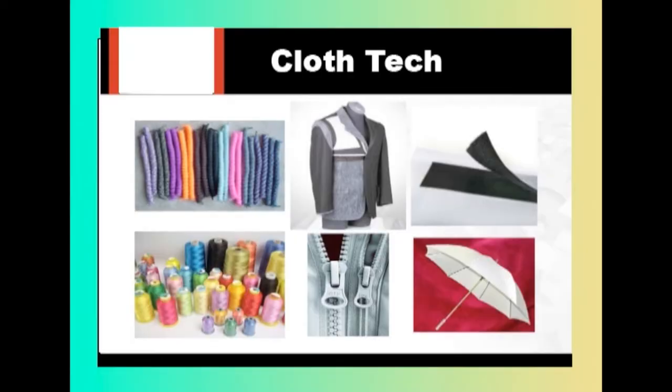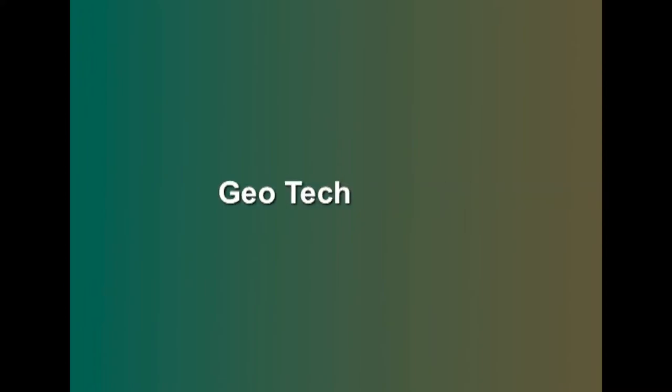In the textile and apparel industry, clothing components for Cloth Tech include fiber, yarn, and textiles used as technical components during apparel manufacturing. Those clothing components are sewing threading, interlinings, and insulation. It should be noted that clothing components do not include the main outer and lining fabrics of apparel, nor does it cover protective apparel or clothing.